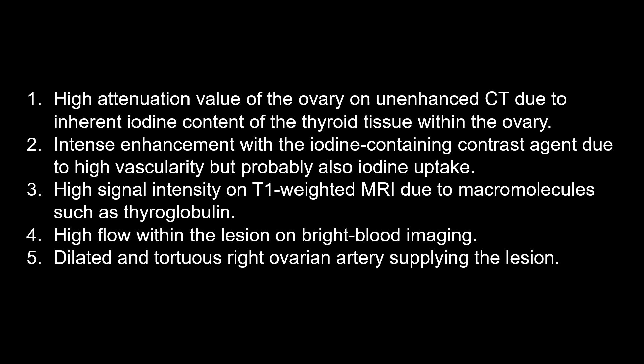Third: the high signal intensity on T1-weighted MRI, due to macromolecules such as thyroglobulin. Fourth: the high flow within the lesion on bright blood imaging, which is counter-intuitive if we consider an ordinary case of ovarian torsion. Fifth: dilated and tortuous right ovarian artery supplying the lesion.